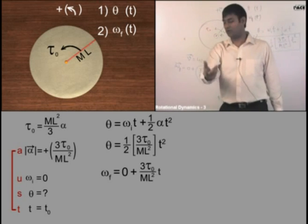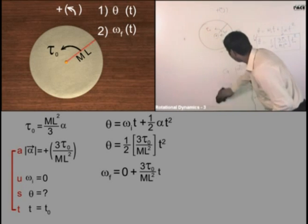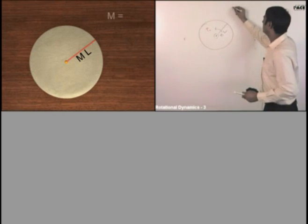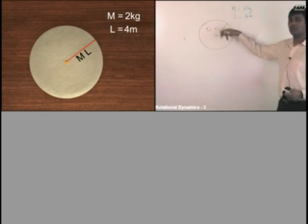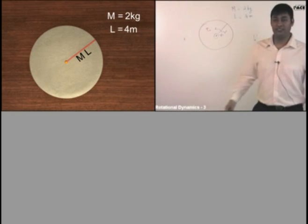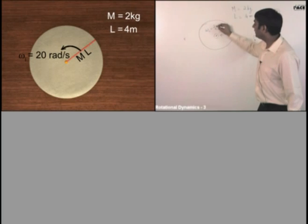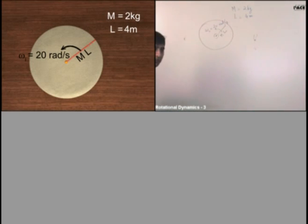Now I will give you a numerical question so you get the charm of solving and getting an answer. If the mass of the rod is 2 kg, length is 4 meters, and the rod is rotating in gravity-free space with an initial angular velocity of 20 radians per second. The SI unit of angle is radians, so angular velocity is radians per second — or just per second, since radians is dimensionless: theta equals arc length divided by radius, both in meters.